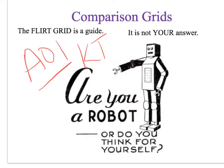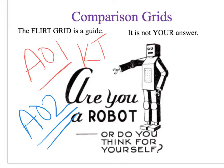The next thing you have to do is your AO2. This is where your flirt grids are invaluable because all of the AO2, all of the information in relation to poetry methods, that's all on your flirt grid. So learn it. You need to have a clear and concise understanding of every single technique here.